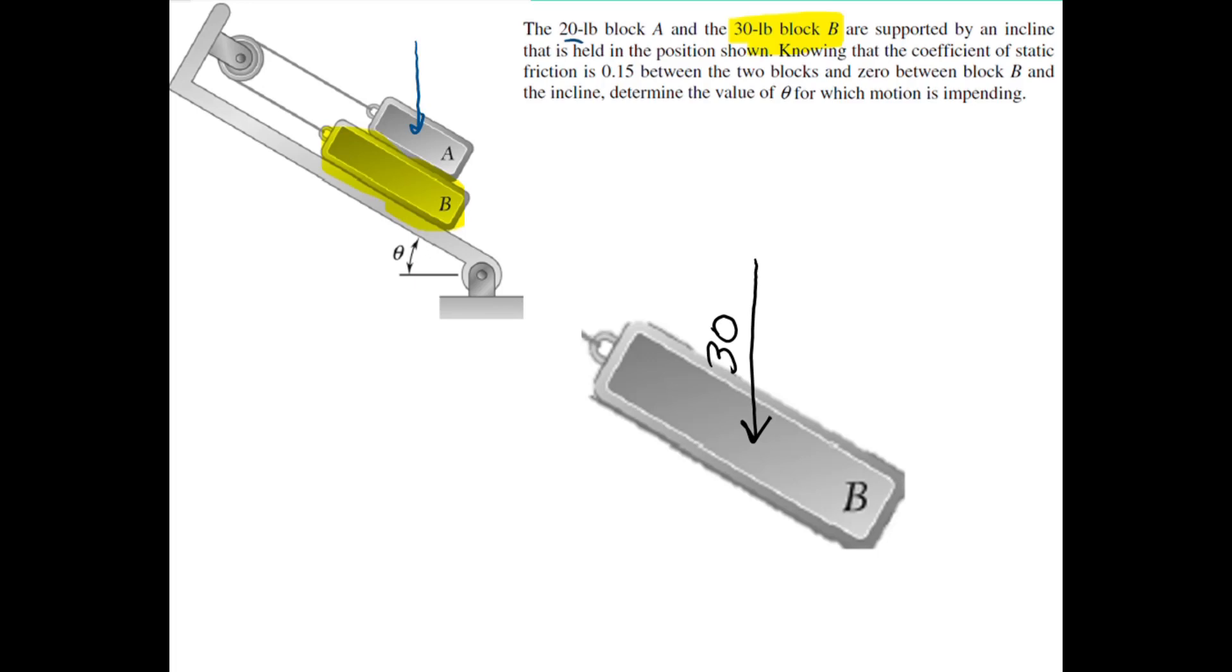So we have block B's weight. So B weighs 30 pounds. Only part of A's weight is pushing on B. So part of A is held up by the tension, and only part of it is pushing on B. So be very careful to think about what is actually applied on B. B is going to move down, which means the friction force is moving up. So this is opposite of the direction on A.